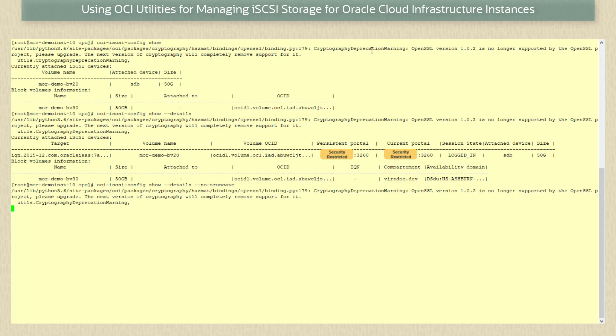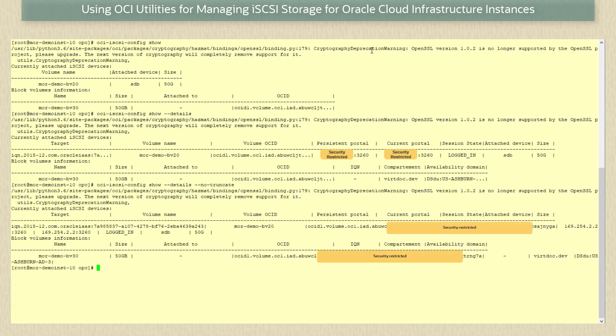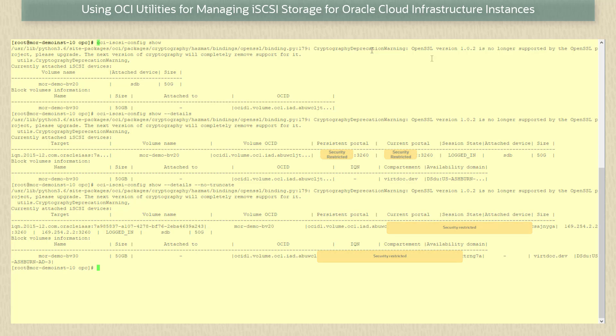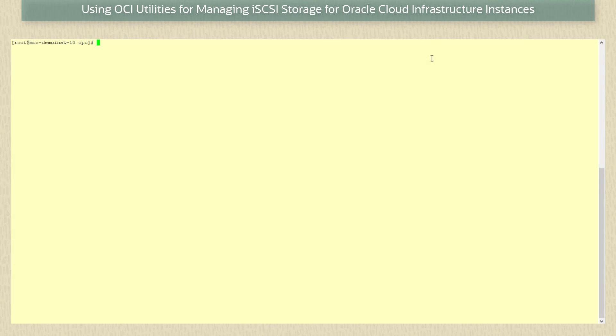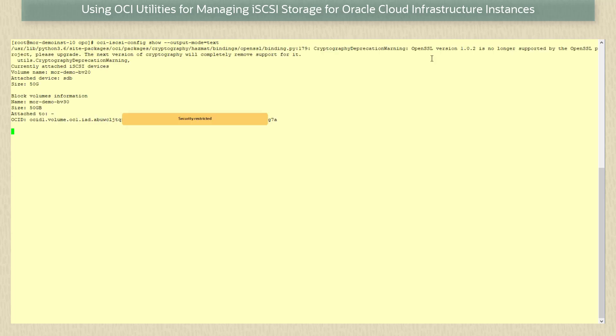The default output for the show option is in table form. To see a textual output we use the command oci-iSCSI-config show --output-mode=text, and for more details run the same command with the --details option.